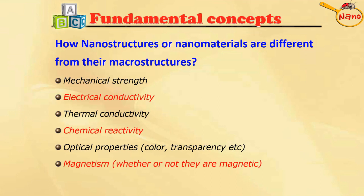How are nanostructures or nanomaterials different from their microstructure or bulk counterparts? Several properties change: mechanical strength changes — for example, carbon nanotubes are nearly 100 times stronger than steel. Electrical conductivity also changes; some materials become very conductive or very insulating depending on their properties. Thermal conductivity also changes — heat carrying capacity changes when we move from bulk to the nanorange. Chemical reactivity abruptly increases because surface energy increases.